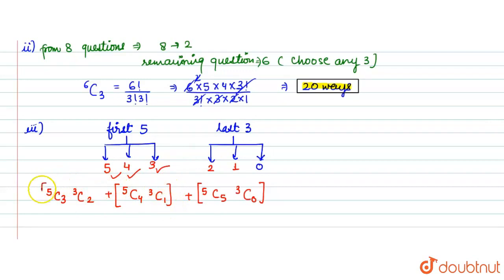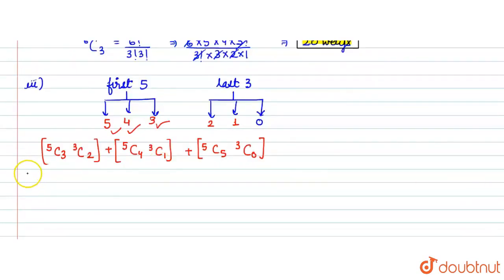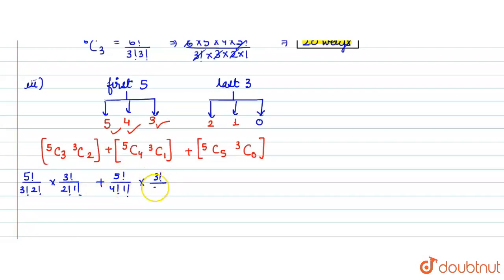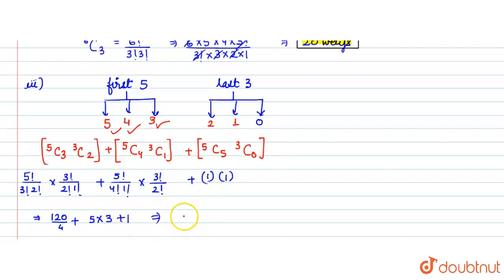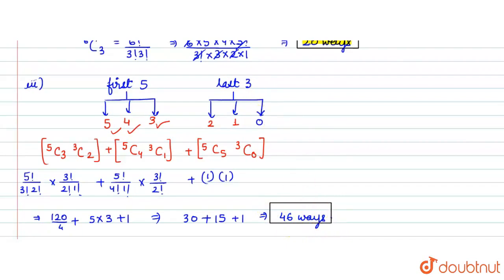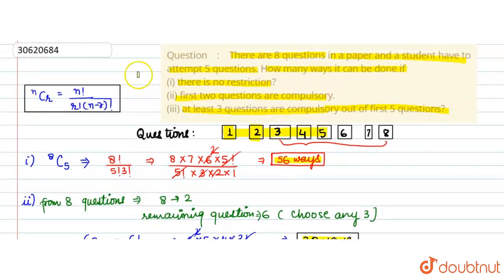So we have 3 cases to solve. 5C3 = 5!/(3! × 2!) = 10, and 3C2 = 3, giving 10 × 3 = 30. Plus 5C4 × 3C1 = 5 × 3 = 15. Plus 5C5 × 3C0 = 1 × 1 = 1. The total is 30 + 15 + 1 = 46 ways. So there are 46 ways to attempt the paper when at least 3 from the first 5 questions are compulsory. These are the answers. Thank you.